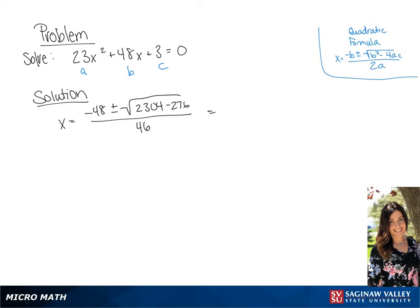If we simplify that, we get negative 48 plus or minus the square root of 2,028 all over 46.